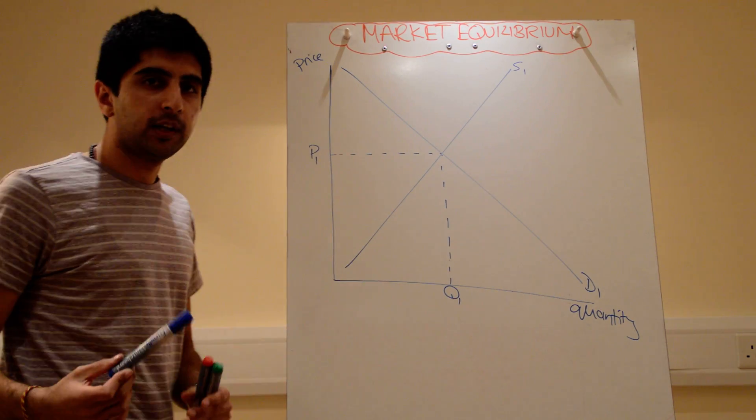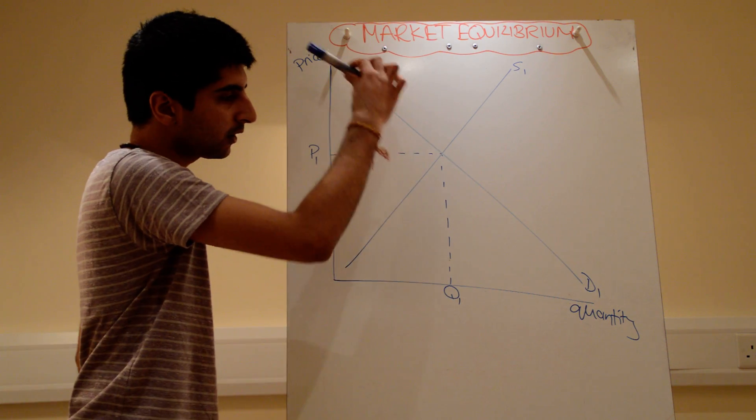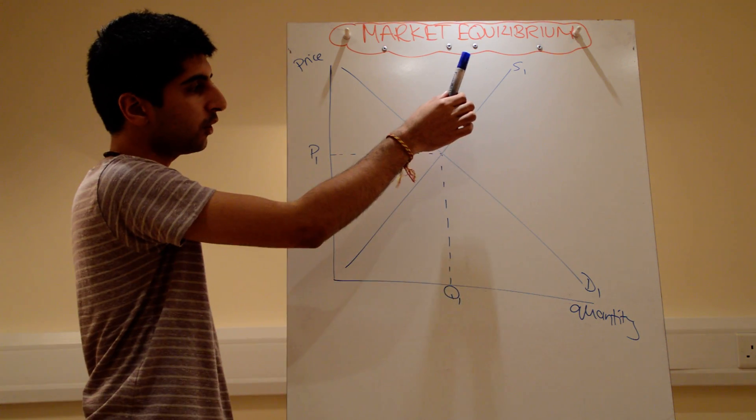Okay, we've now studied demand and supply in limited view. Let's put them both together onto one diagram. The demand curve is downward sloping, supply curve is upward sloping.